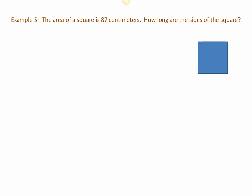Still working with a square: the area of a square is 87 square centimeters — how long are the sides? Since all sides are equal, the area formula gives x² = 87. We need to undo the squaring process, and a square root undoes squaring. Whatever we do to one side of the equation we must do to the other, so we take the square root of both sides: the square root of x² gives us x.